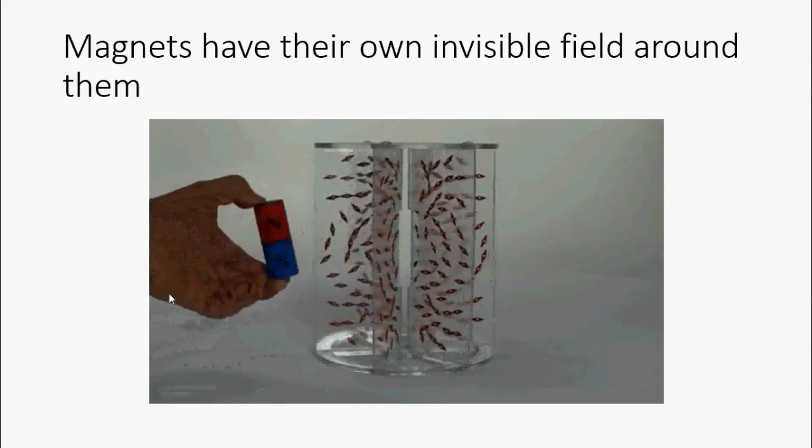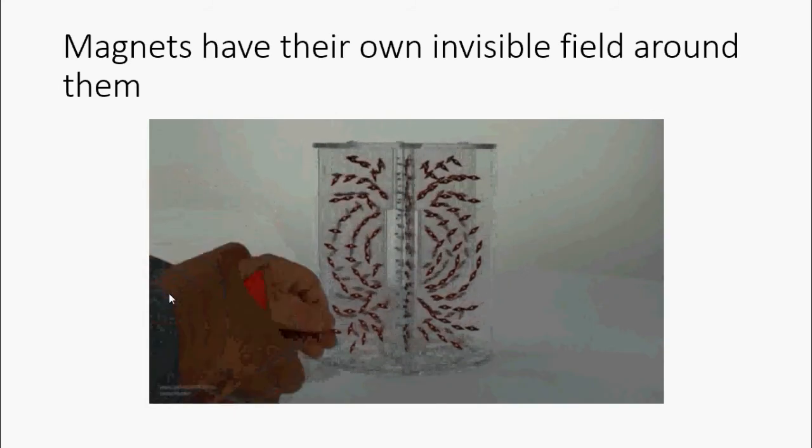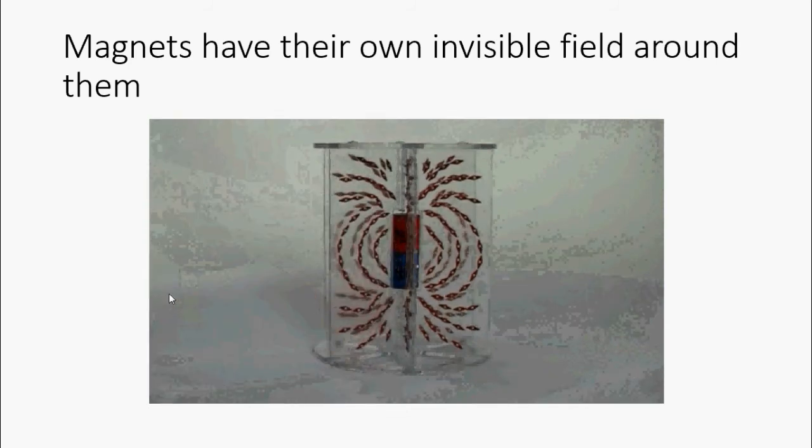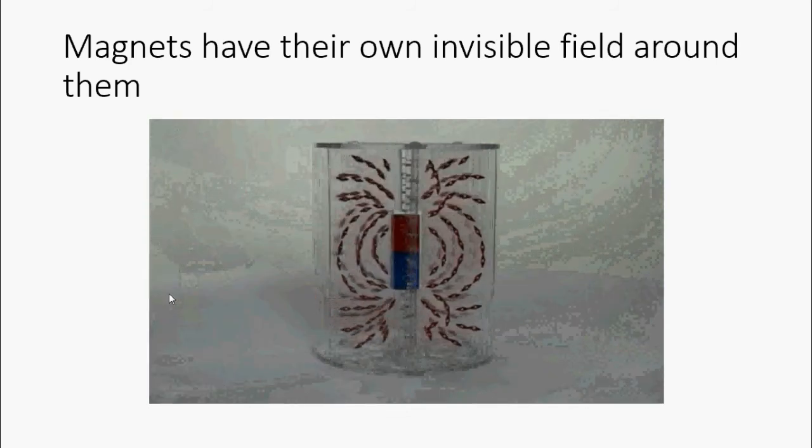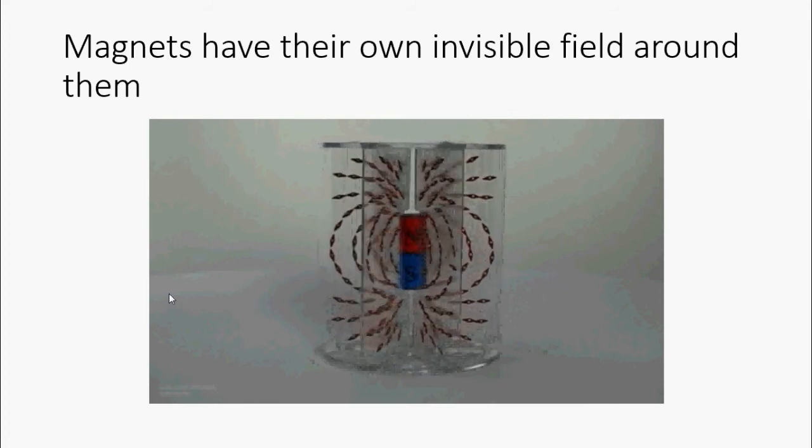Magnets have their own invisible field around them. As you can see on this video, we can discover how the lines of the magnet's magnetic field look like.